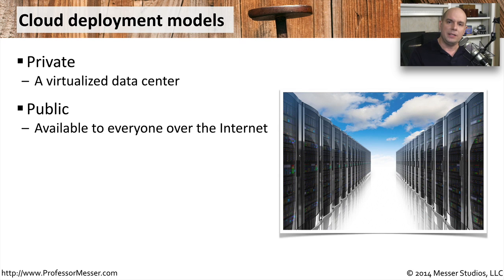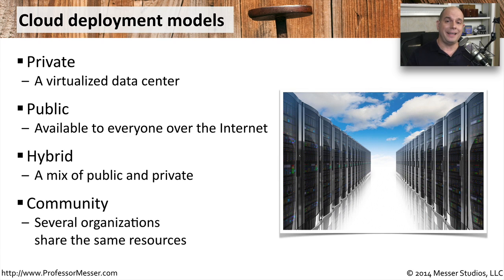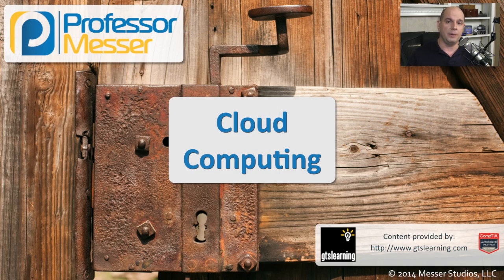Occasionally there might be a mix of public and private cloud — a hybrid — depending on how your application is used. You might want to keep your data local but have Platform-as-a-Service located externally in the public cloud. You may also see a community model of cloud computing, where a central resource in the cloud — like a mail server — is shared among multiple organizations using that same resource. This allows the cloud provider to scale up very easily and support many different customers all on the same platform.